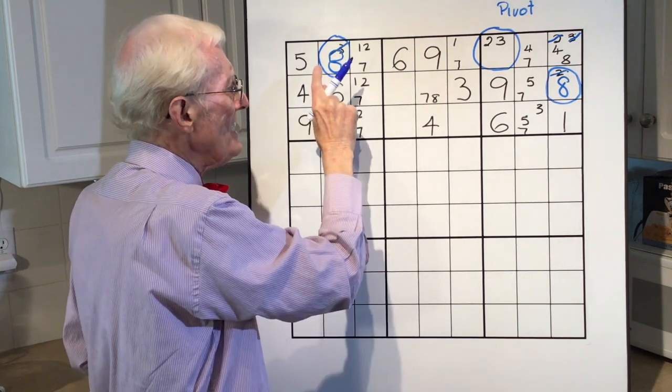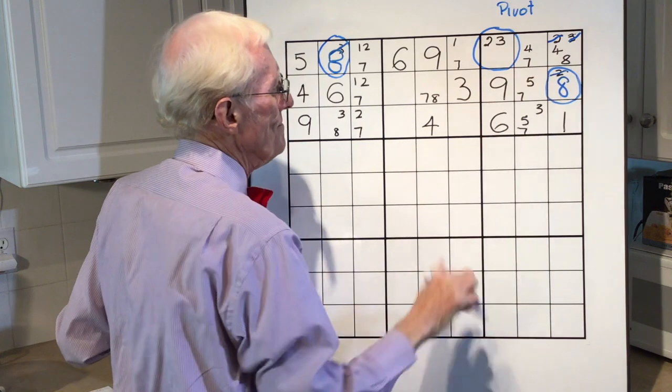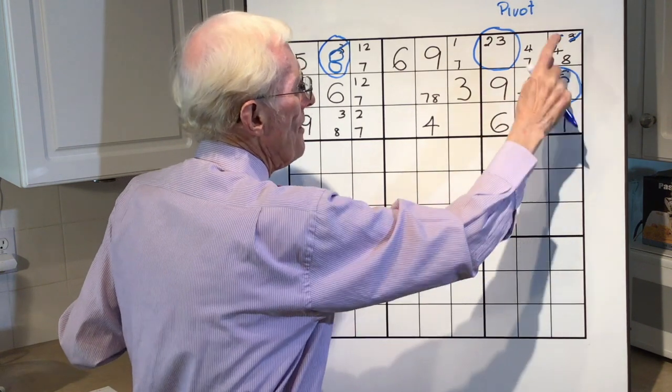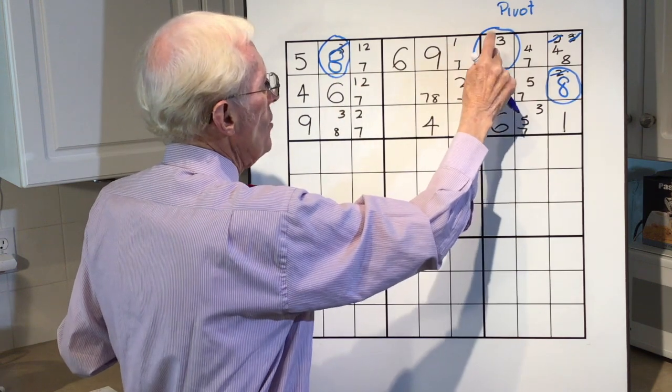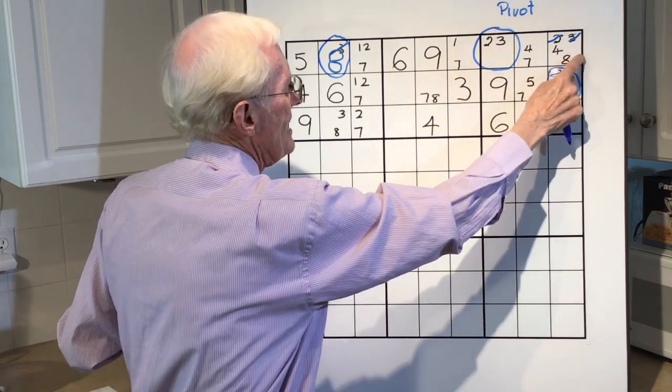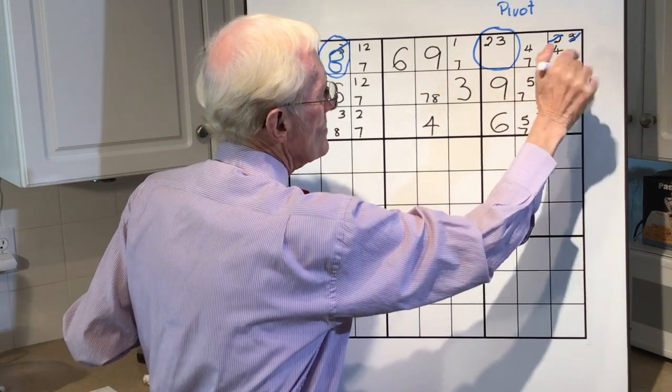If in both cases, because that's an 8, that cannot be an 8. If this is an 8, that cannot be an 8. In both cases, whether it's a 2 or a 3 there, that cannot be an 8. So we can eliminate it, cross it out. Okay?